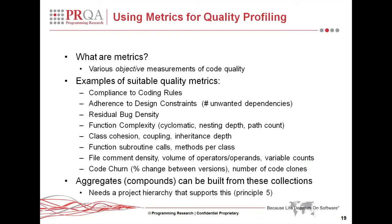Probably the main point about quality profiling and using metrics is that you can build aggregates — what we call compounds — from all these different collections. In order to do that properly, you need a project hierarchy that supports that concept, which was principle five: the idea that you can roll up information from functions into a project-level metric.